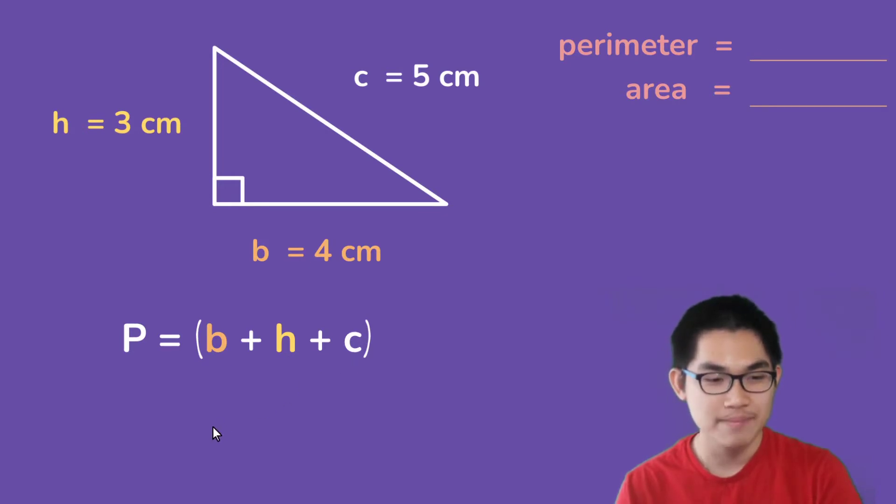And so we know that the base is 4, the height is 3, and C is 5. So the perimeter is 4 plus 3 plus 5. So 4 plus 3 gives you 7, and 7 plus 5 gives you 12. And so the perimeter of this triangle is 12 centimeters. And don't forget to include the unit at the end.